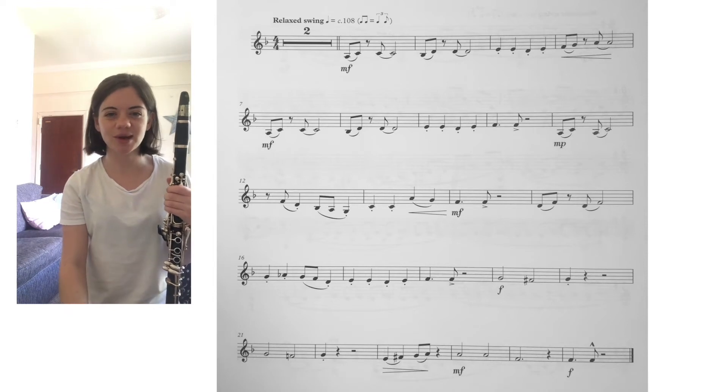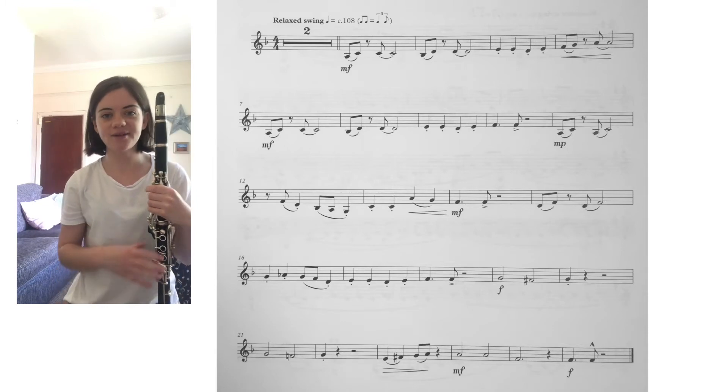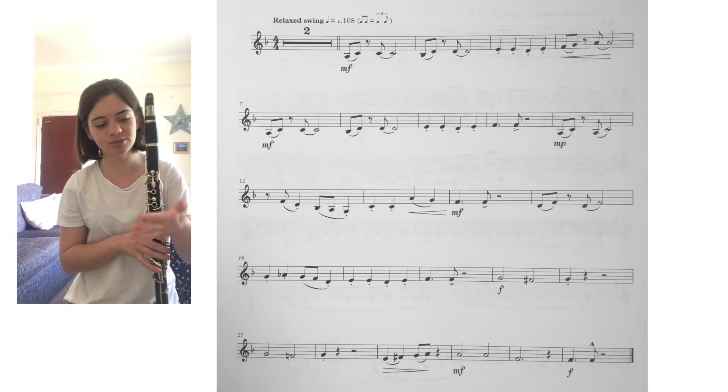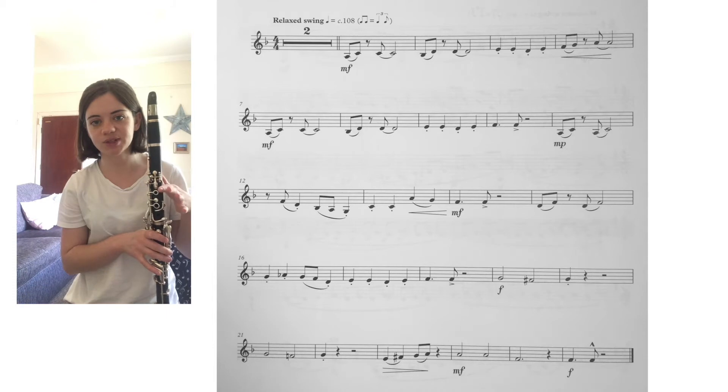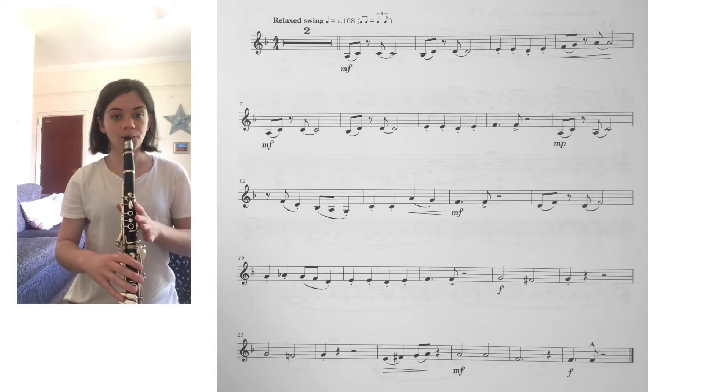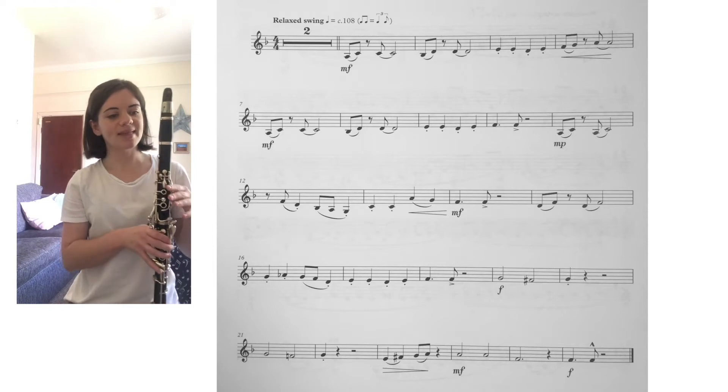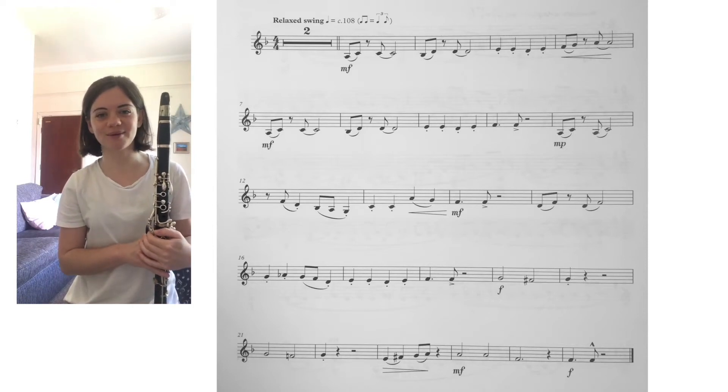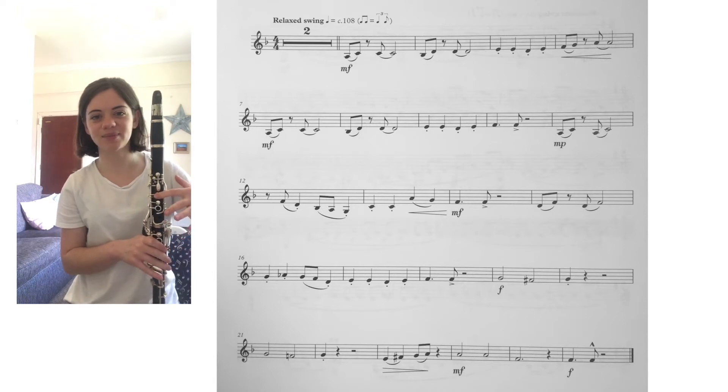Before we read through this piece, there's just two notes we're going to have a quick look at. We have got an A flat in bar 16. A flat is this corner key here, and remember you just play it with the inside of your finger like that, don't press it with the point of your finger, just like that. And then the other one we're going to need is an F sharp. I think you probably remember that one; it's your front finger. There's your normal F, there's your F sharp.